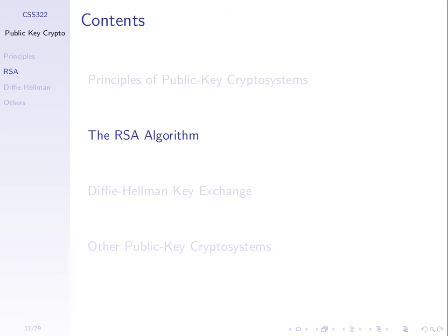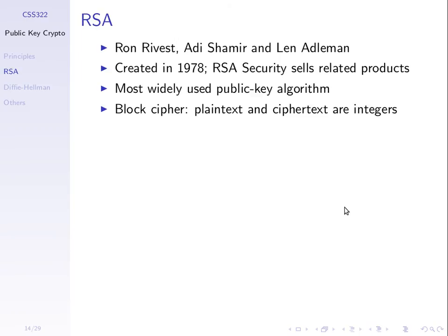We introduced public key cryptography last lecture and demonstrated it by going through how RSA works. We went through the steps for generating a key pair — a public and private key for each user. RSA is the name of the algorithm, named after its three inventors: Ron Rivest, Adi Shamir, and Len Adleman.